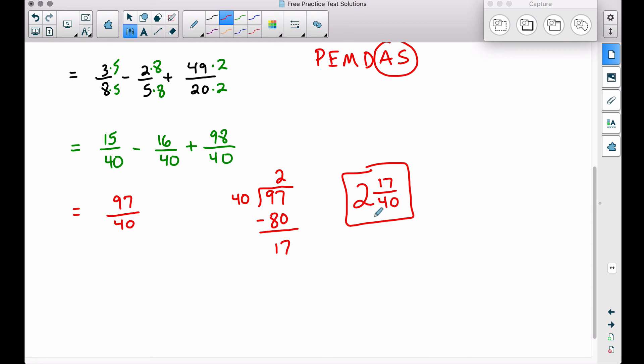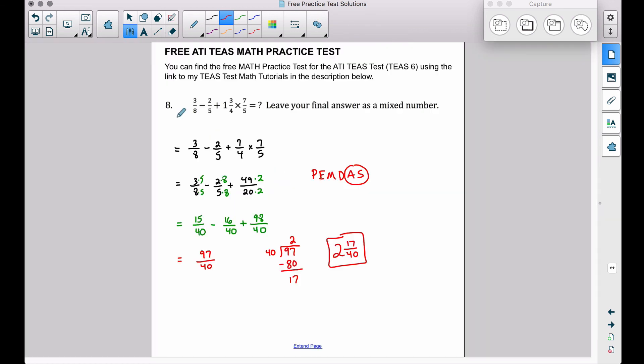And you can always check your work by converting this back to an improper fraction to verify that this matches this improper fraction here. Forty times two is eighty. Eighty plus seventeen is ninety-seven. Boom! Over forty. And there you have it. A problem involving a lot of fractions with addition, subtraction, and some multiplication, as well as converting between mixed numbers and improper fractions. And that's it for this video. I hope it helped.